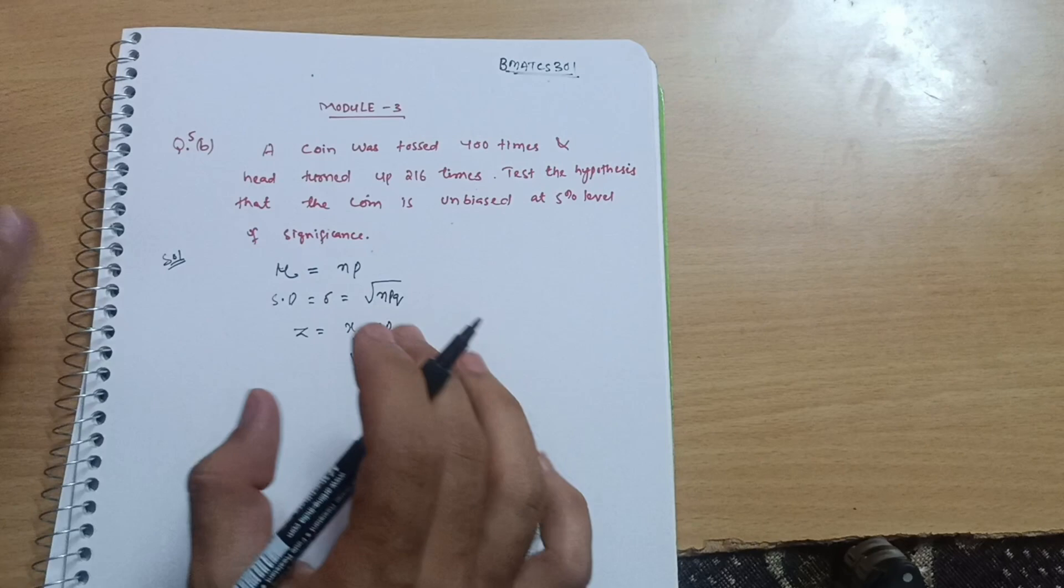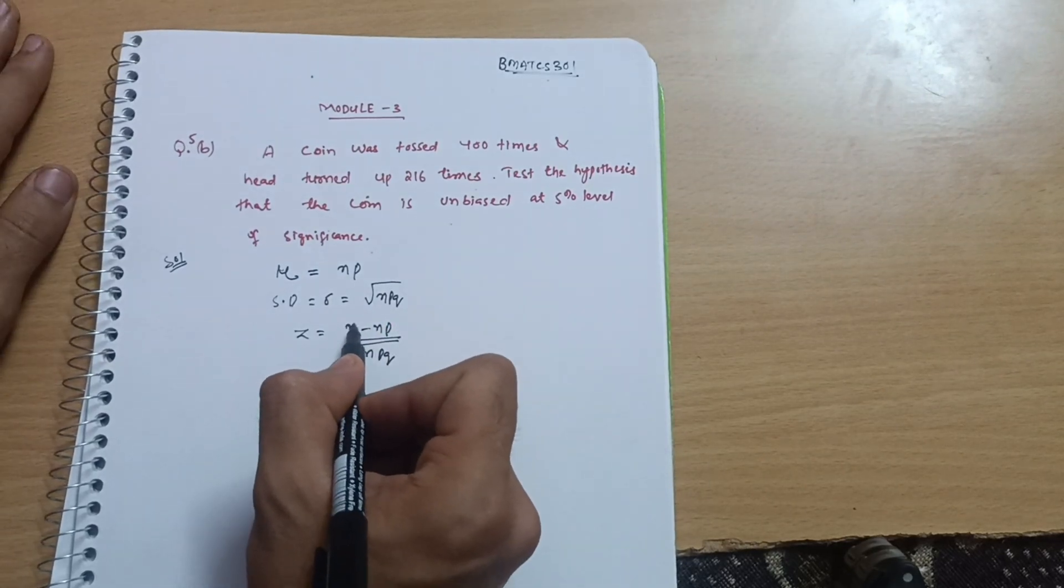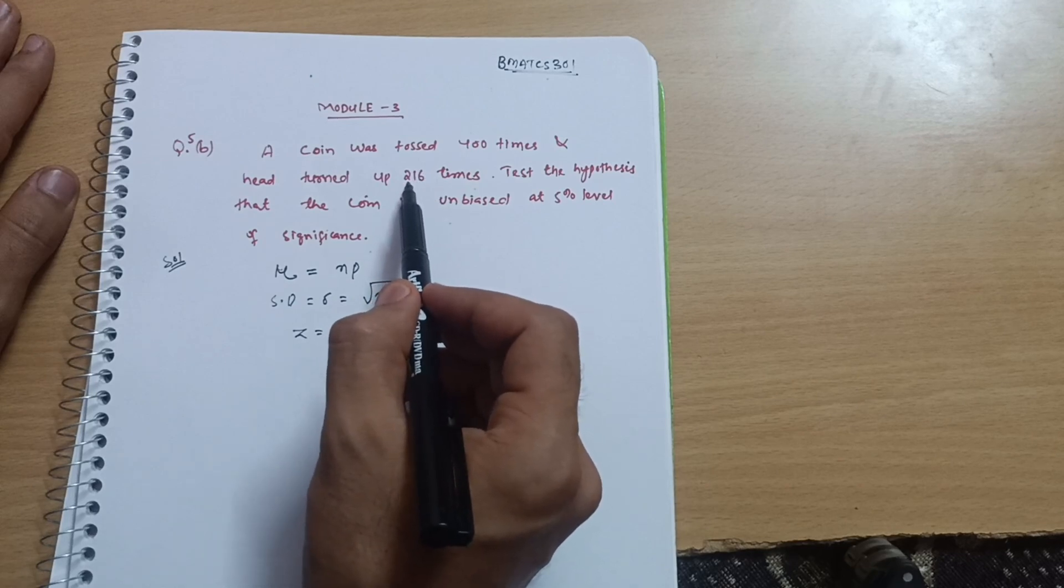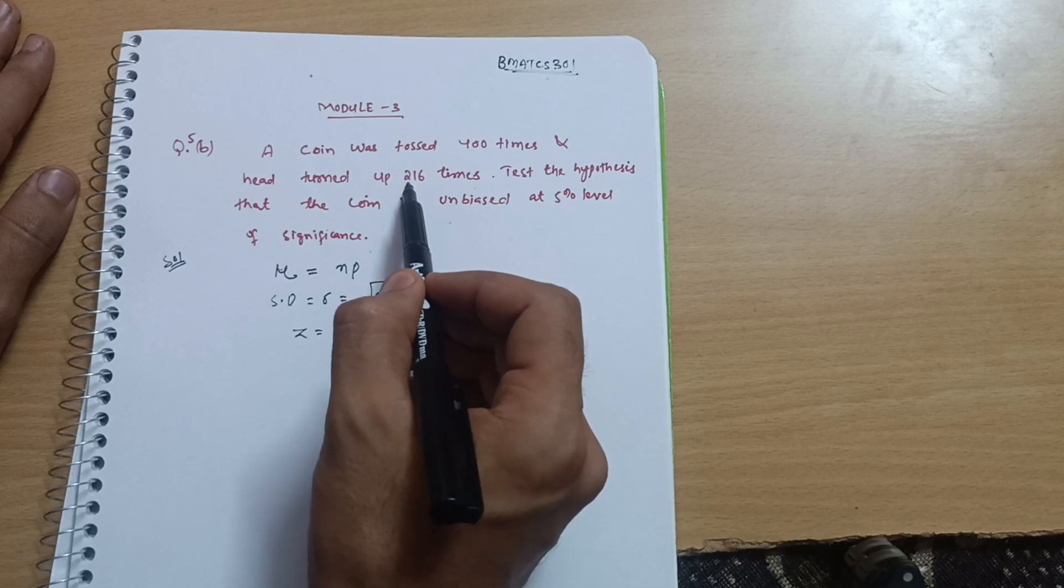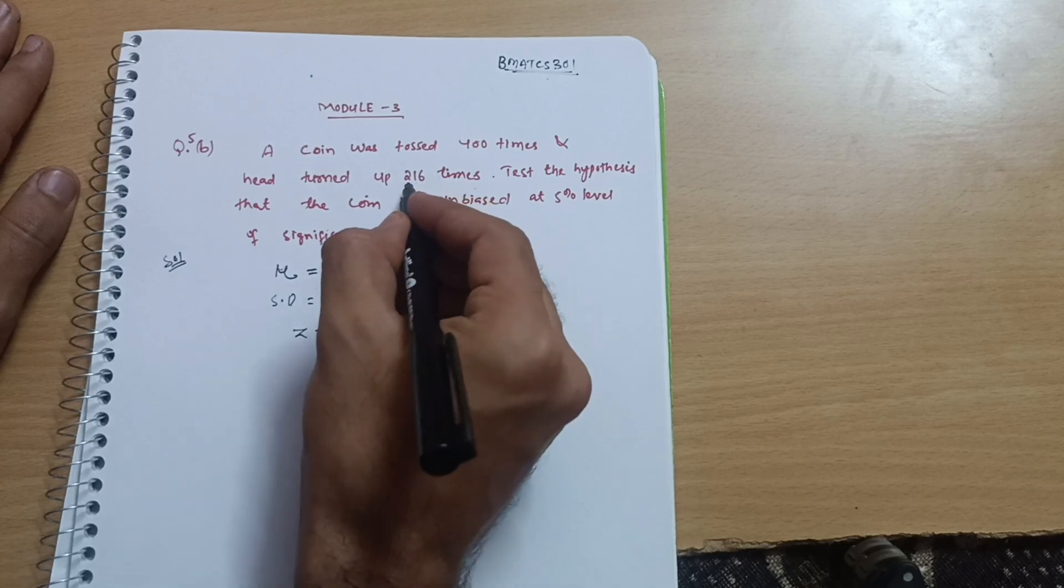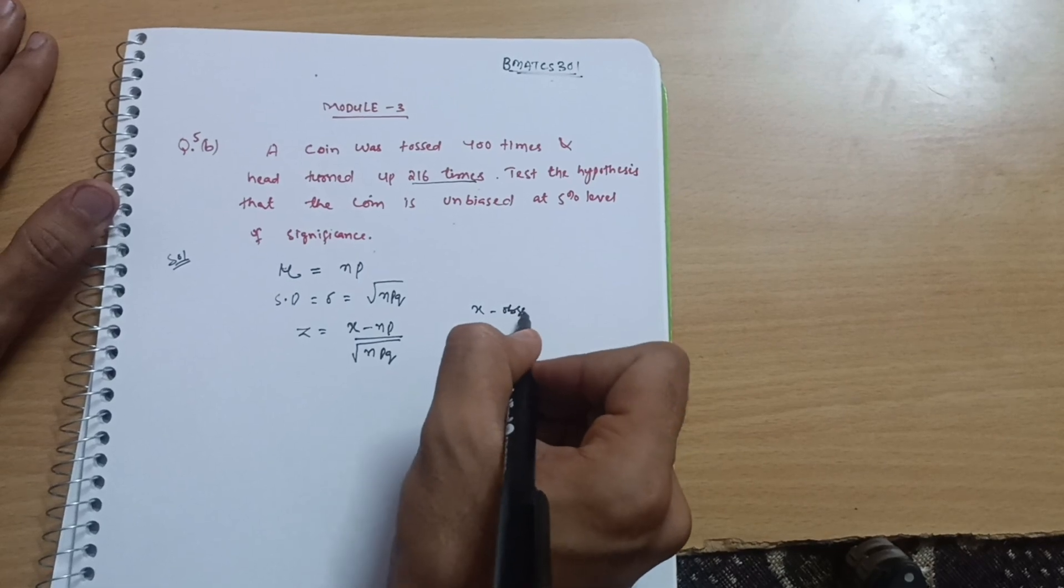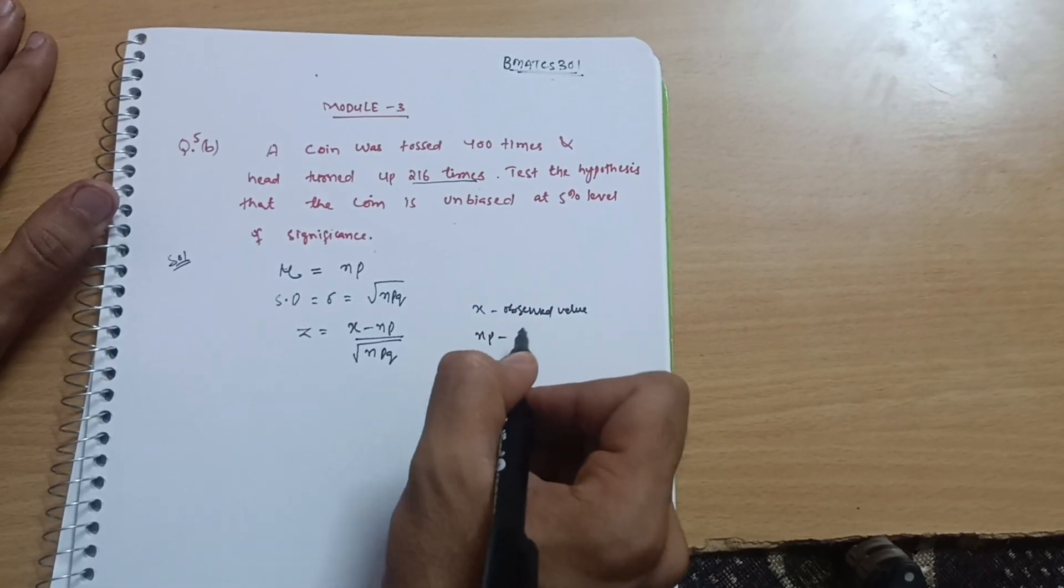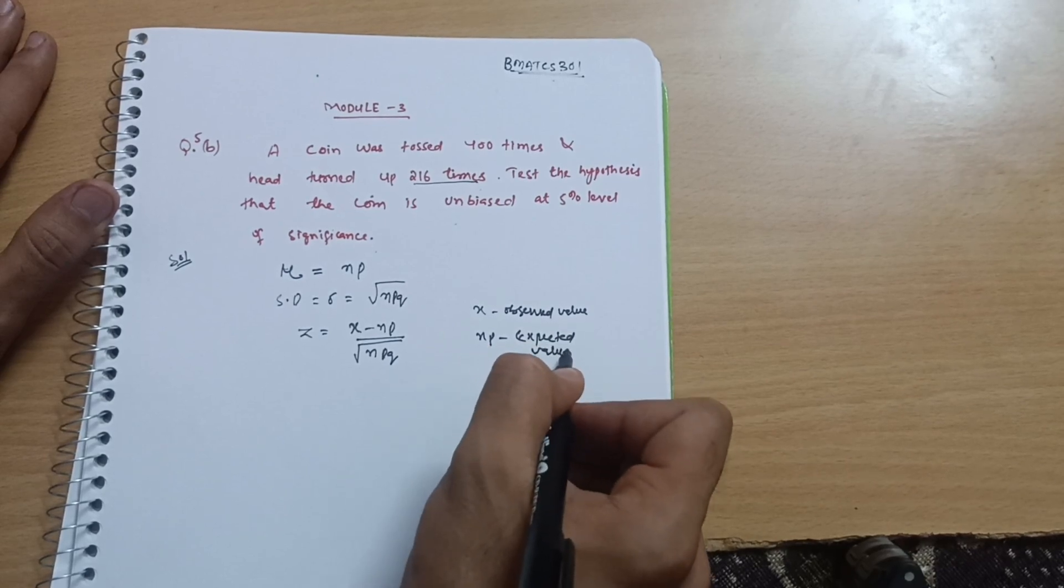That is given by x minus NP divided by under root of NPQ. These are the three formulas which you have to use in this particular question. So what is this x? x is the observed value. In this case head turned up 216 times, so it is the observed value.